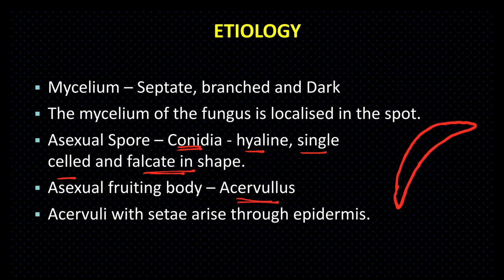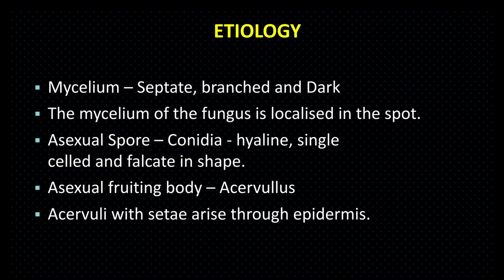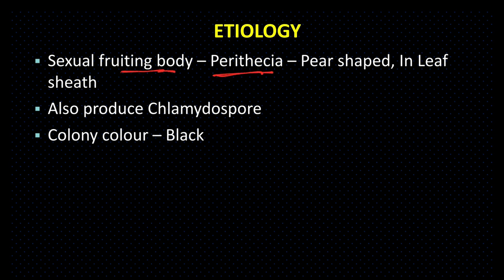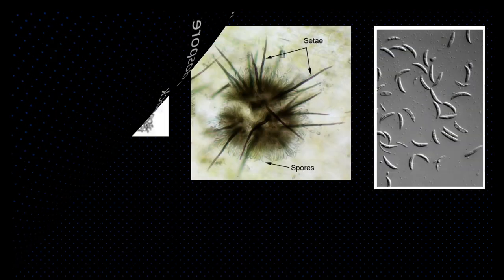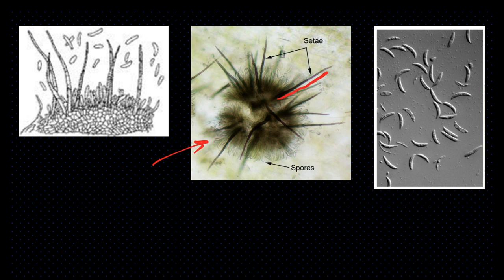Asexual fruiting body: Acervulus — conidia, Acervulus में बनते हैं, और इसके Acervulus में setae नाम का एक structure present होता है। Sexual fruiting body: Perithecia — यह pear-shaped होता है और leaf sheaths में produce होता है। Pathogen also produces chlamydospores, जो एक resting structure है। Colony color black होती है। Acervulus में बहुत सारे conidiophores होते हैं जिनसे hyaline, single-celled, falcate conidia बनते हैं।